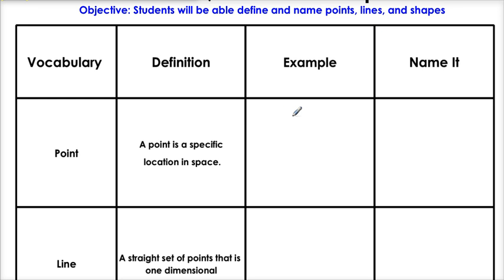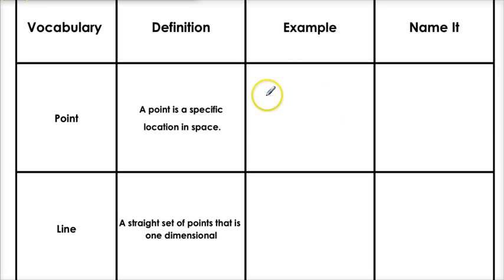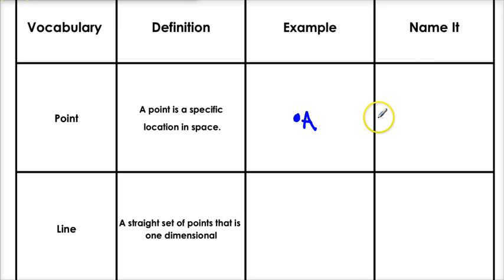If you're in a geometry class, you've got to know some basic vocabulary. These are the things we're going to be talking about a lot. The first thing we're going to be talking about is points. A point is a specific location in space. Like, here's space — boom, that's a point. And you've got to name it. When we name it, we just put a capital letter next to it.